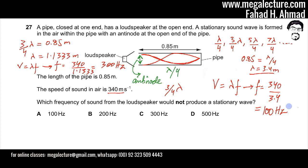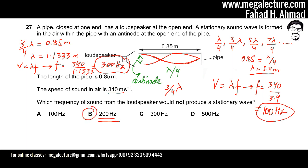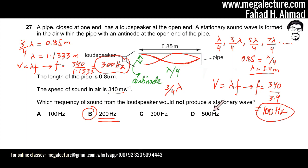The frequencies that produce stationary waves in this pipe are 100 Hz, 300 Hz, 500 Hz — odd multiples of 100 Hz. Notice that 200 Hz is absent from this series. You can verify that 5λ/4 = 0.85 meters gives lambda and a frequency of 500 Hz. Therefore, the frequency that would NOT produce a stationary wave is 200 Hz, which corresponds to answer option B.